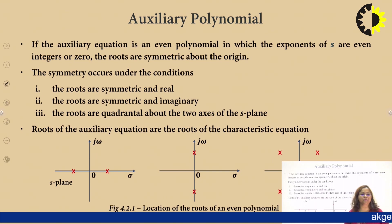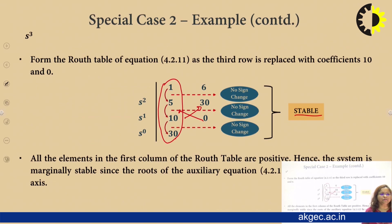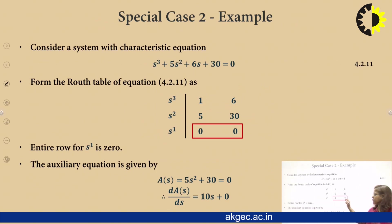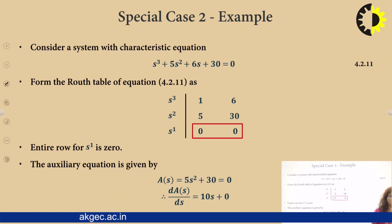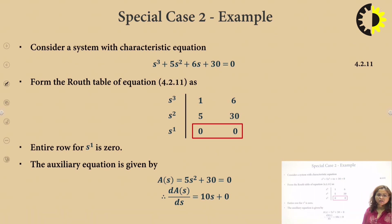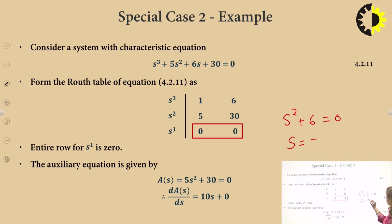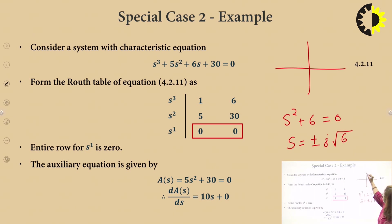What is the importance of the auxiliary polynomial? In the previous example, when a complete row becomes 0, it shows that the system may be marginally stable — some roots may exist on the j-omega axis or in the right half of the s-plane. The location of those roots can be found by solving the auxiliary polynomial. Setting 5s² + 30 = 0 gives s² = −6, so s = ±j√6. The system is therefore marginally stable, not completely stable.